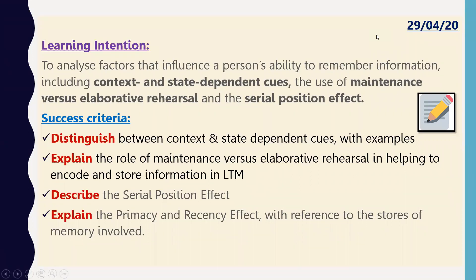Today we're starting the last bit of chapter seven. We're analyzing factors that influence a person's ability to remember information, looking at two types of cues — context and state dependent — along with maintenance versus elaborative rehearsal, and the serial position effect. These are the main topics for today.